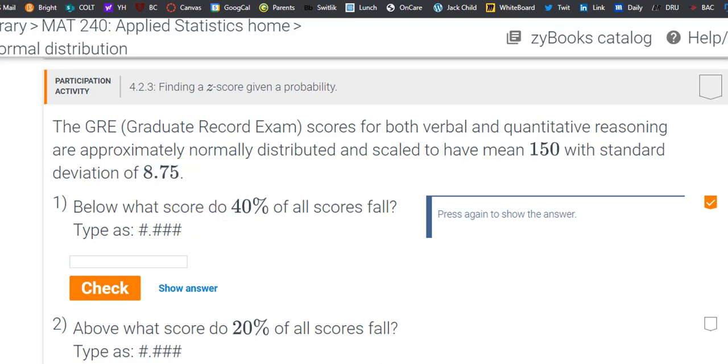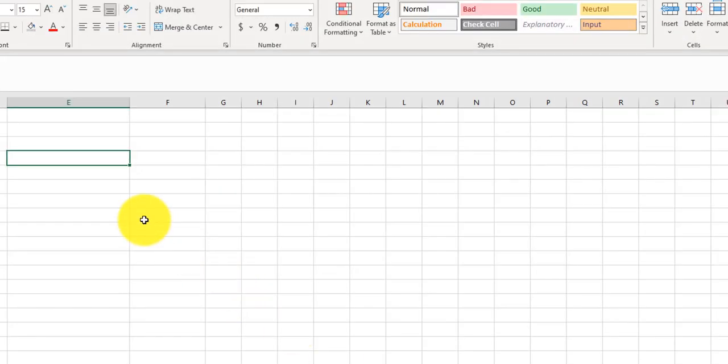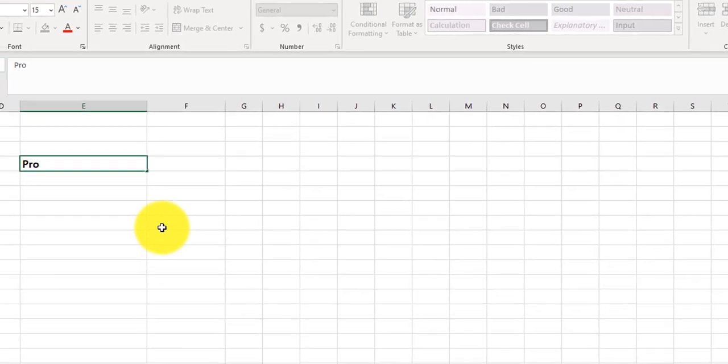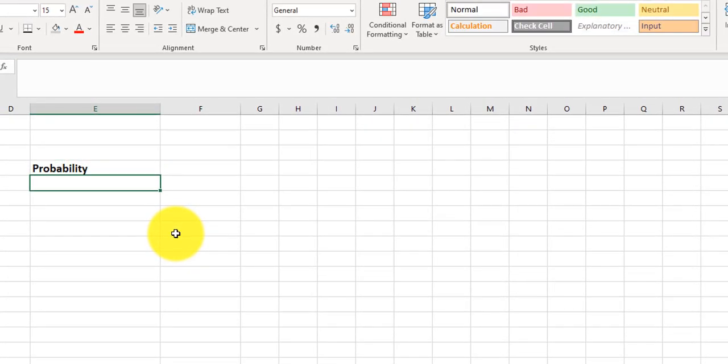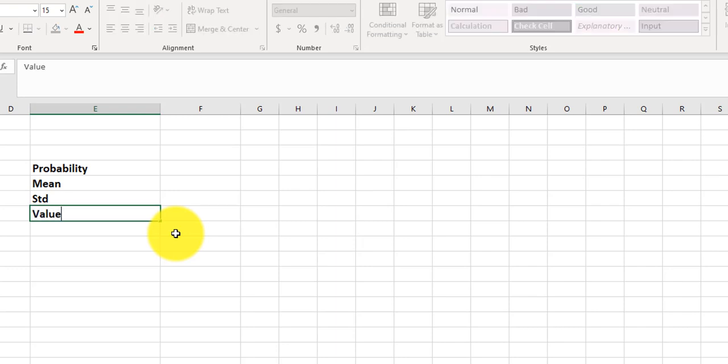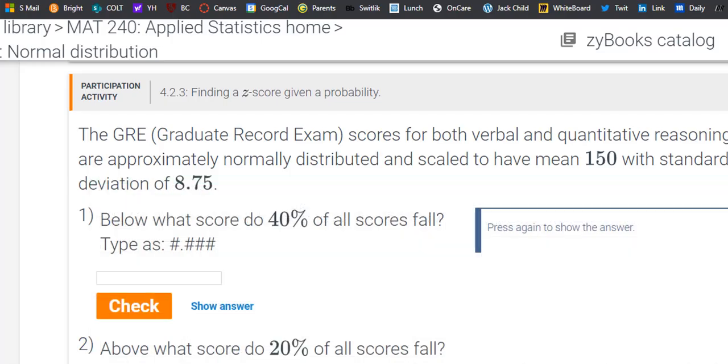So let's use our spreadsheet here and let's write down a few things. Probability, mean, standard deviation, and the value that we're looking for. And I guess we can kind of put question mark - this is what we want to find here.